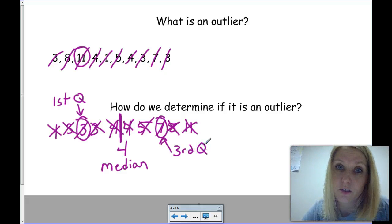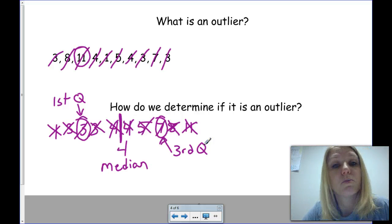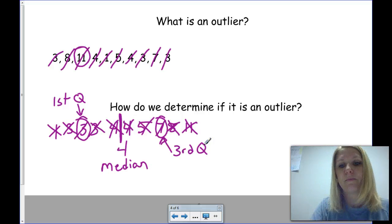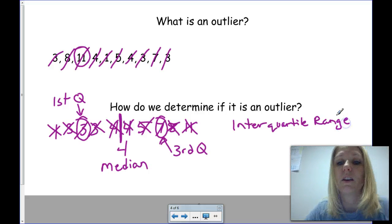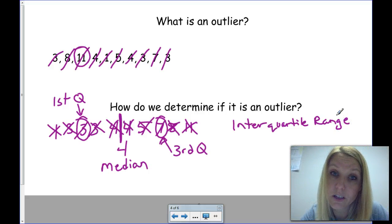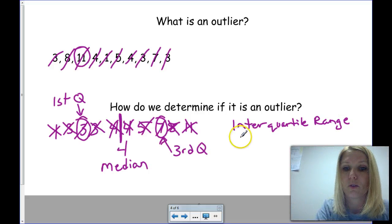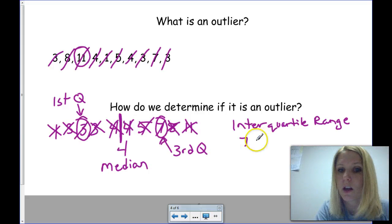The first quartile and the third quartile are important because we need them to be able to find our interquartile range. In order to find that range, what we're actually going to do is subtract Q3 and Q1. So, Q3 minus Q1, which happens to be 7 minus 3, is 4.